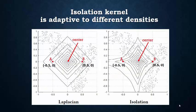What you have seen so far are kernel distributions under uniform density distribution. Given a data distribution which has sparse and dense regions, as you see on this slide, isolation kernel adapts to the local densities. Rate of decrease is high in dense region and low in sparse region.